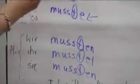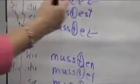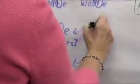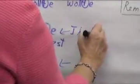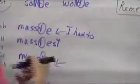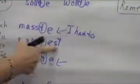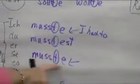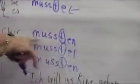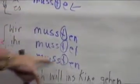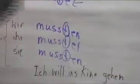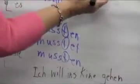Now let's do the English translation. Ich musste — I had to. Du musstest — you had to. Er musste — he had to. Wir mussten — we had to. Ihr mussten — you all had to. Und sie mussten — they had to. So this is the full translation of müssen in the past tense.